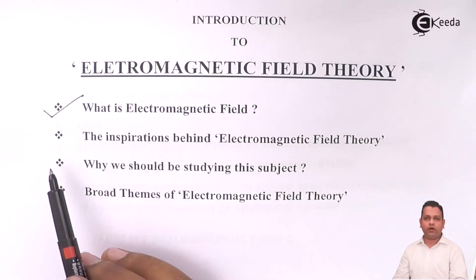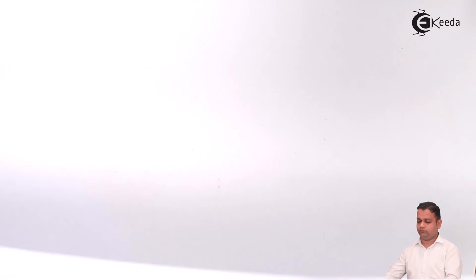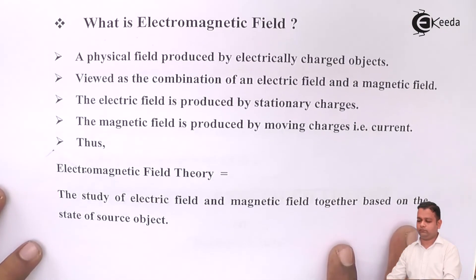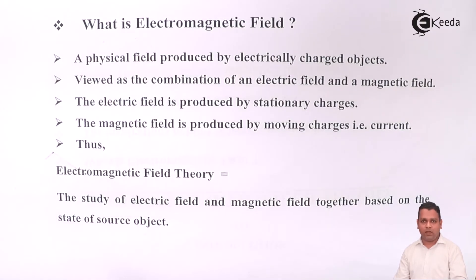So the first point, what is Electromagnetic Field? Electromagnetic Field is the physical field produced by charged particles. As we see the term electromagnetic, it has two parts: electric and magnetic.